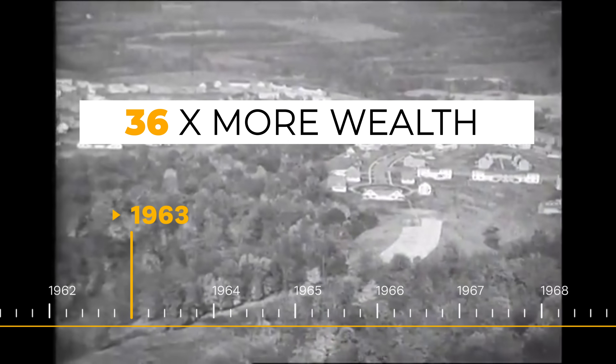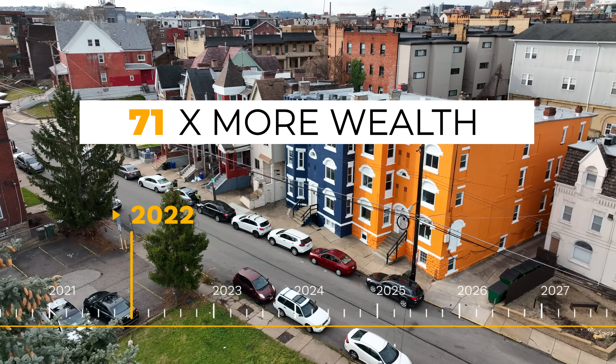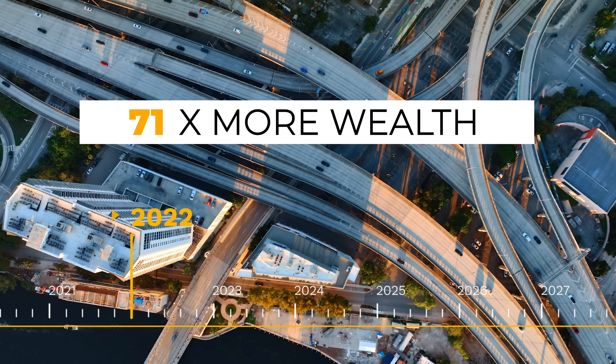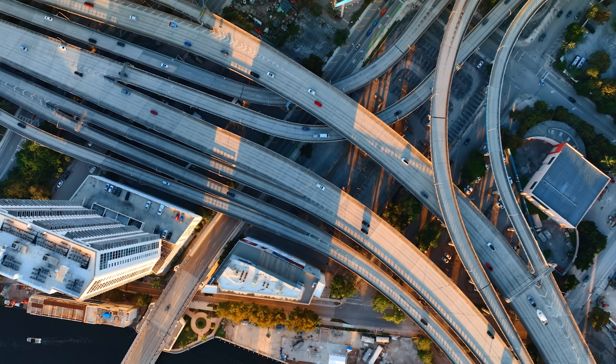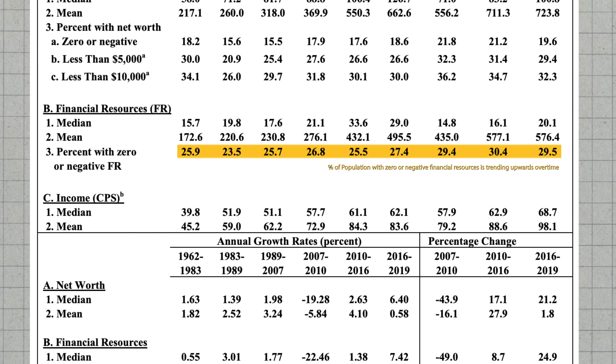In 1963, the wealthiest family had 36 times the wealth of families in the middle of the wealth distribution. By 2022, they had 71 times the wealth of families in the middle. And over the past three decades, America's most affluent families have added to their net worth, while those on the bottom have dipped into negative wealth — meaning the value of their debts exceeds the value of their assets. Which is the literal definition of the richer getting richer and the poor getting poorer. And don't get me wrong, other countries too have experienced widening wealth inequalities. However, no other similarly wealthy nation has done it bigger and better than the United States.